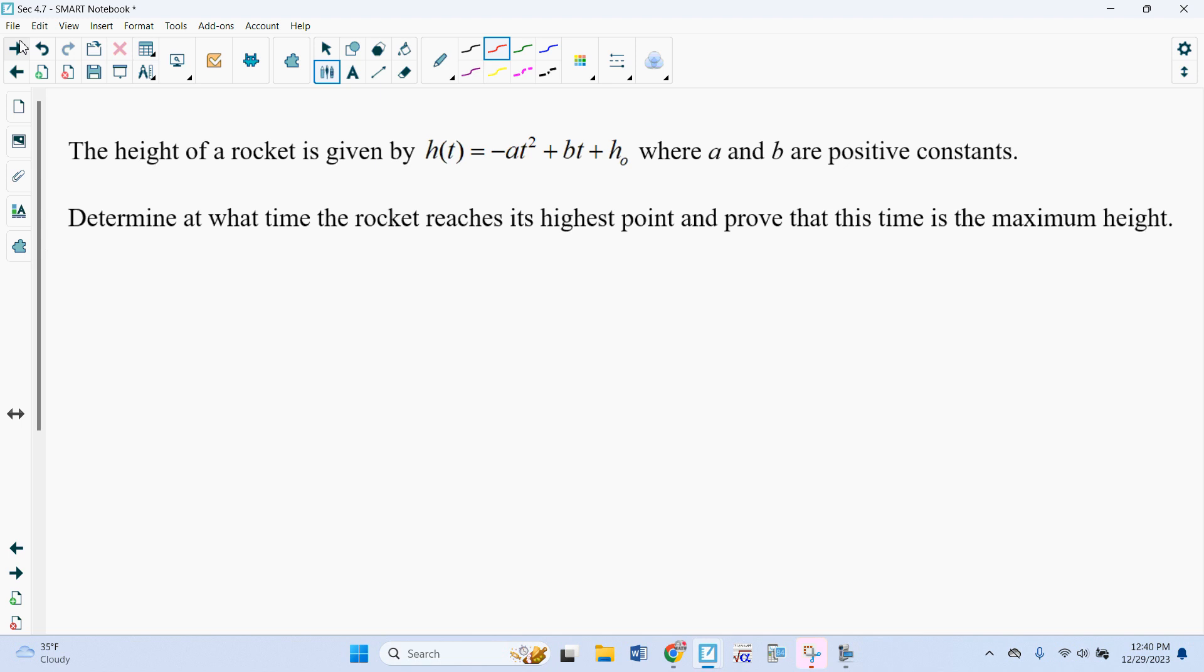Second thing I want to mention is when we looked at a problem like this previously and said, this function gives us the height of the rocket. What is the highest point? Or prove this is a maximum. This is kind of what we're doing with our optimization. And so we would find our derivative, which would be negative 2at plus b. So if we found the critical point and I solve for t, that would give me negative b over 2a. And then we wanted to determine, is this a max or a min? Or in this case, prove it's a maximum height.